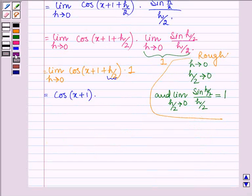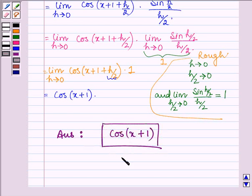Thus, the derivative of the given function, found using the first principle, is cos of x plus 1. This completes the third part. Hope you have understood it. Take care and have a good day.